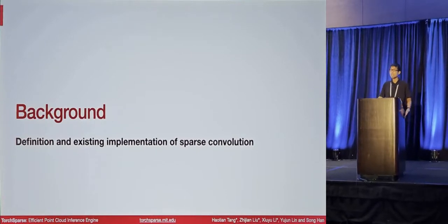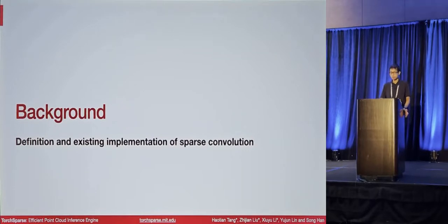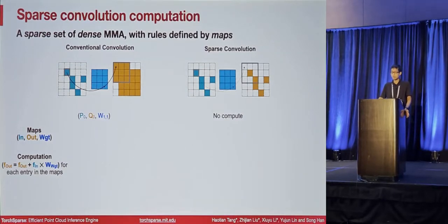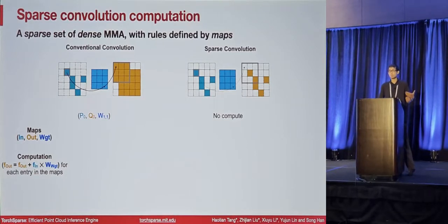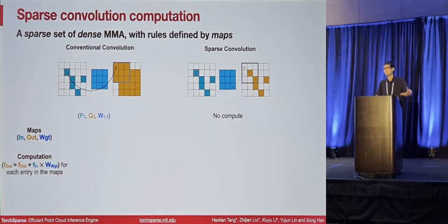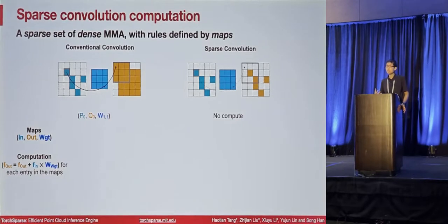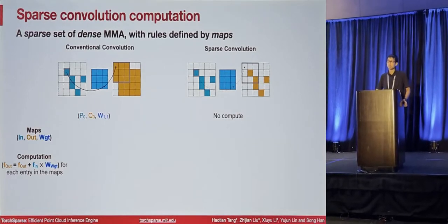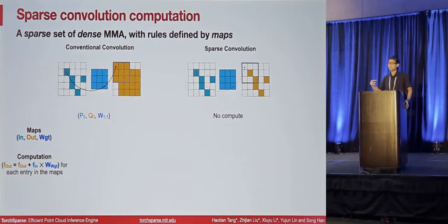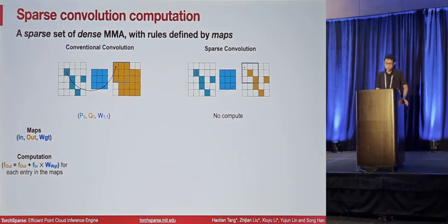To understand how we perform these optimizations, we need to look at the definition and existing implementation of the sparse convolution operator on general-purpose GPUs. Sparse convolution is defined as a sparse set of dense matrix multiplication and accumulation. Because this is sparse computation, we define the rule of computation using a data structure called the map — a collection of three-tuples. For each tuple, there are three elements — input, output, and weight — which are indices to points or weight matrices. For each of these three-tuples, we fetch the feature from F_in, multiply it with weight W, and scatter the result to F_out. For each map, we perform this computation, forming the final computation flow for the entire sparse convolution.